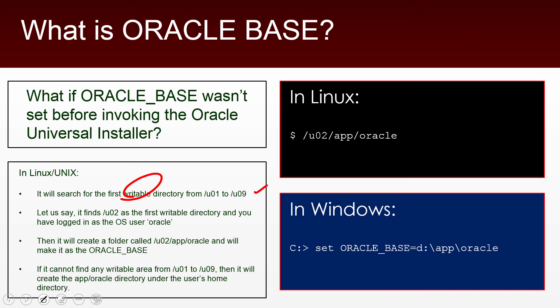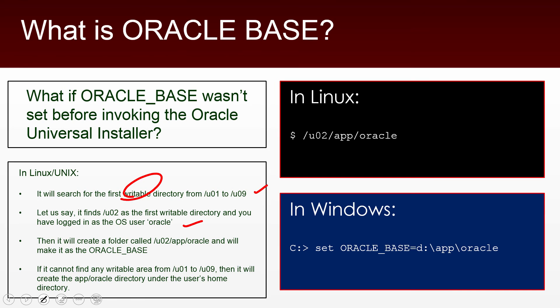Remember, when you log into any multi-user system like Windows or Linux, you need to log in as an operating system user. It is common to create a user called oracle on database machines and install Oracle software under that user. If you are logged in as the user oracle and /u02 is the first writable directory, it will create /u02/app/oracle — using the username — as the Oracle Base. If it cannot find any writable area from /u01 to /u09, it will create the app/oracle directory under the user's home directory.